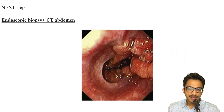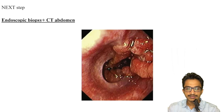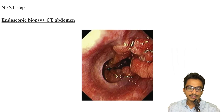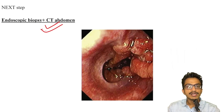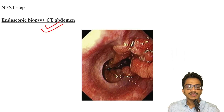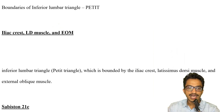If an endoscopy image is given with an ulceroproliferative growth in the stomach, the next step is always to do a biopsy and then a CT scan of the abdomen to see the local staging and also consider regional spread. The answer would be endoscopic biopsy with a CT scan of abdomen.